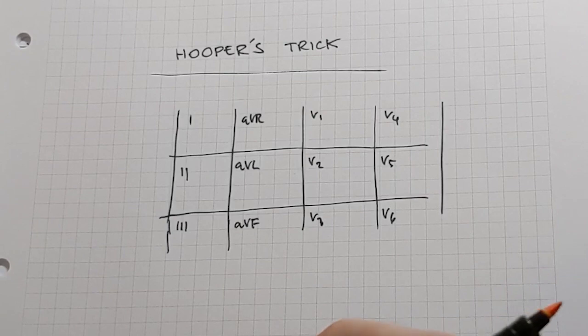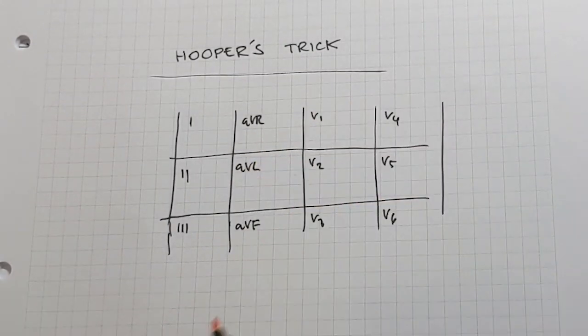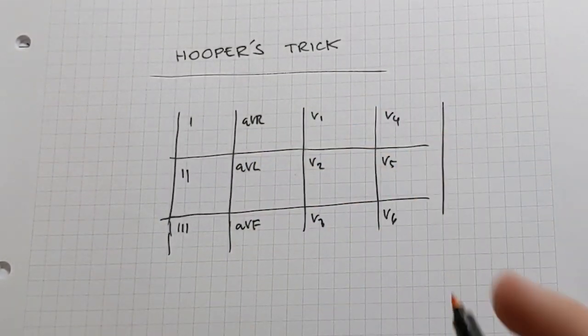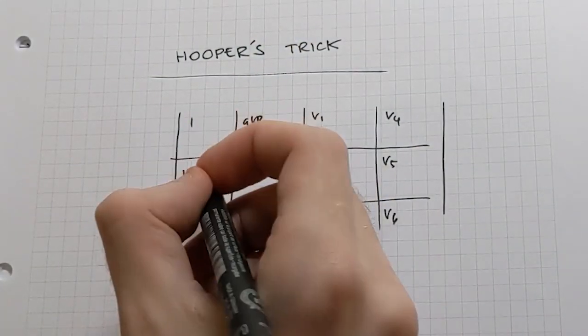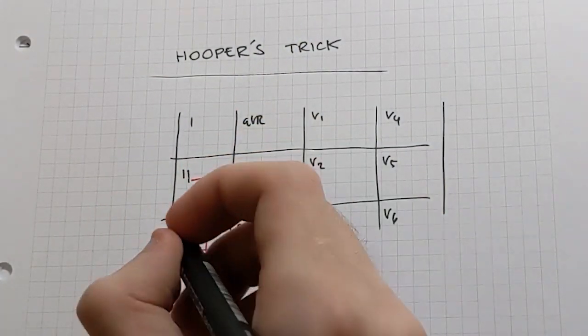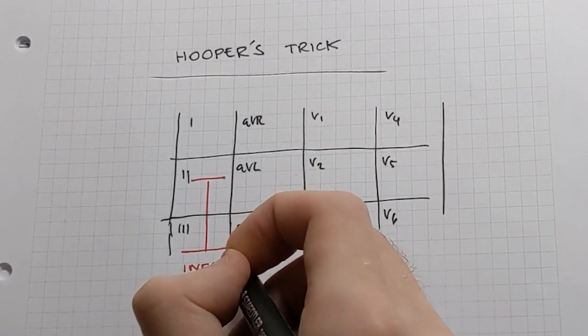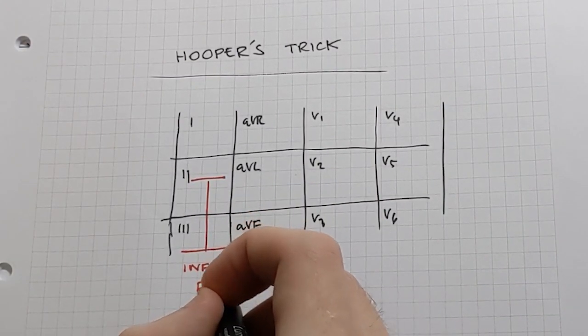And then this is the trick that's going to help you remember, and it certainly works for me, and we're going to draw on essentially a letter that corresponds to each territory. So we're going to start with a big capital I in this bottom corner, which is our inferior, and that corresponds to the right coronary artery.